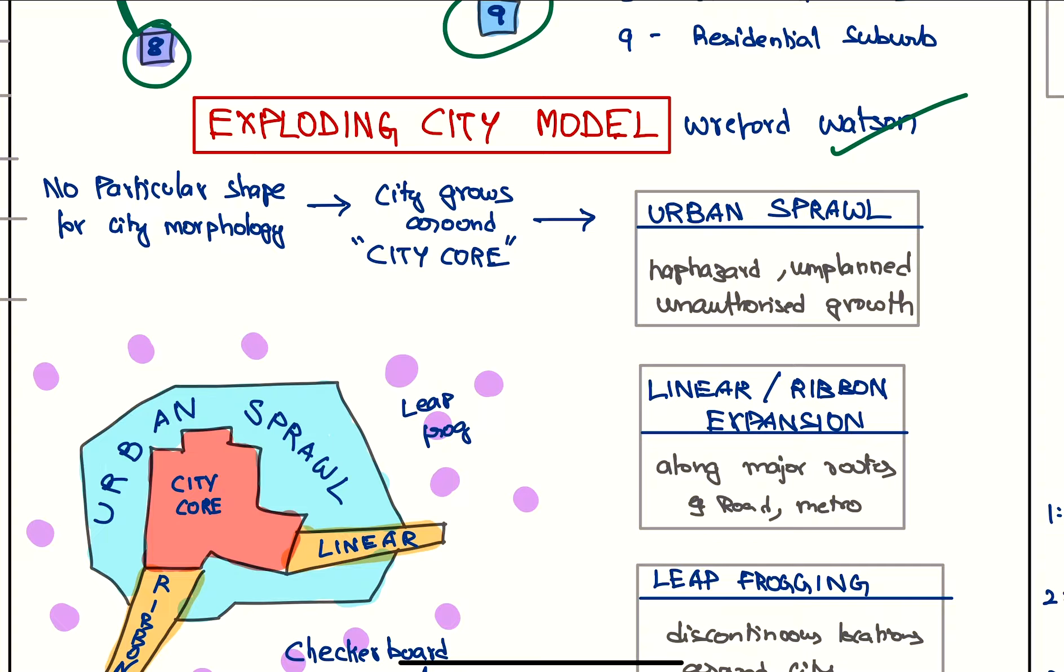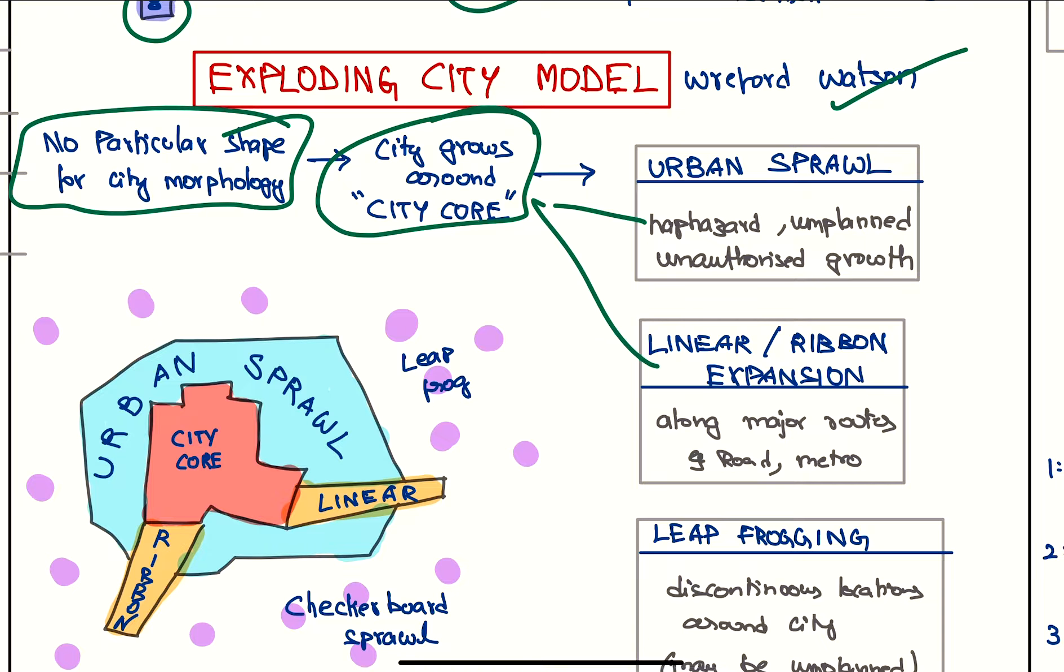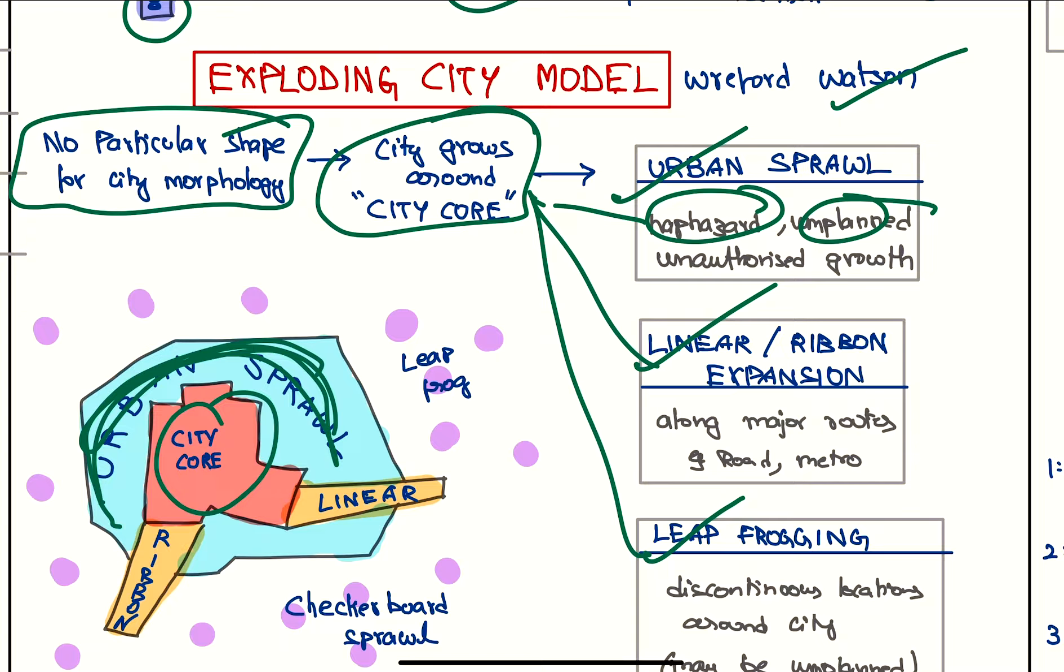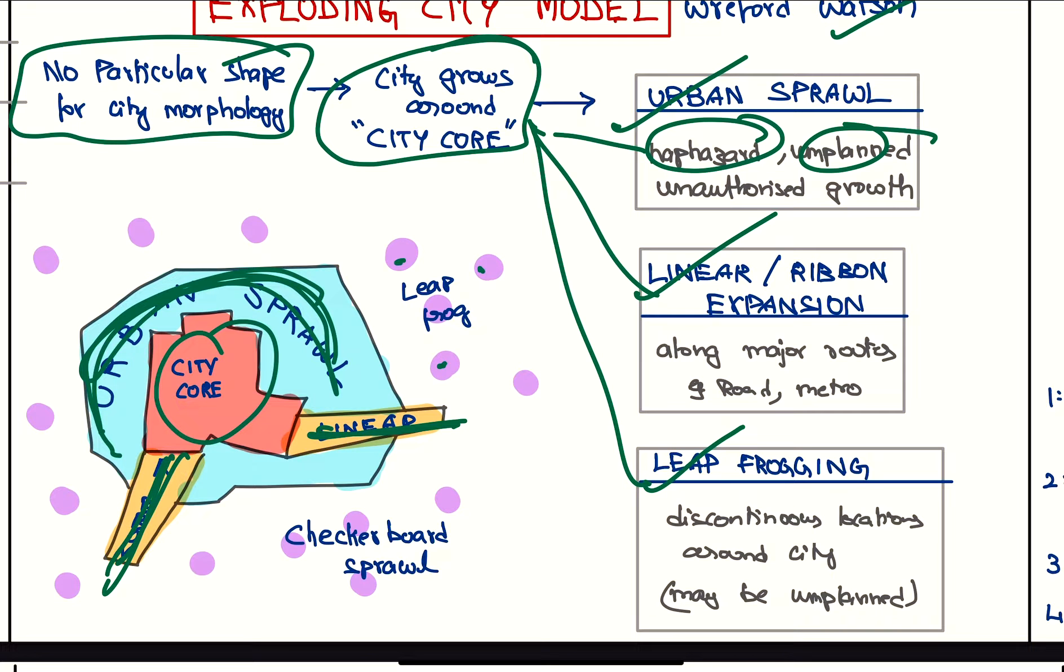According to him, there is no particular shape for city morphology. City grows around the city core, but the expansion can be of three types: urban sprawl, linear or ribbon expansion, and leapfrogging. Urban sprawl is haphazard, unplanned growth around the city core. Linear urban settlements happen along the transport route - these are generally planned. Leapfrogging are discrete settlements that pop up around the urban areas because of low rentals. This can be of checkerboard sprawl or leapfrog settlements.